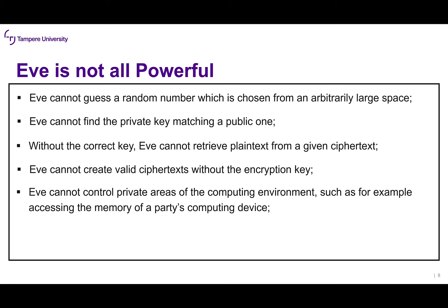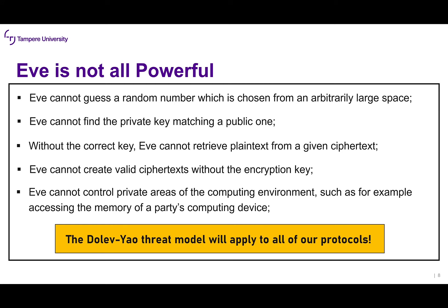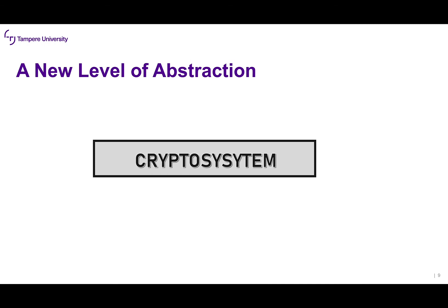Eve cannot control private areas of the computing environment, such as accessing the memory of a party's computing device. We actually assume physical security, because if Eve could access Alice's memory she could obtain all the secrets Alice has exchanged with Bob. Keep in mind that the Dolev-Yao threat model will apply to all of our protocols from now on — in every protocol we describe, we assume Eve is acting under it.